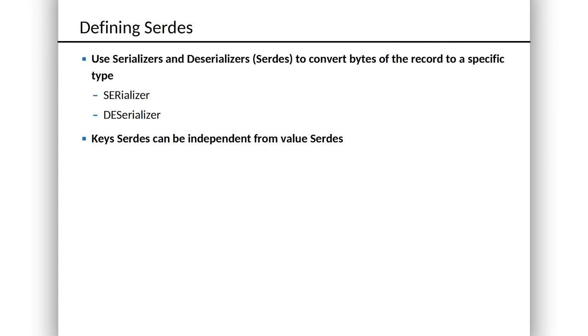A word about types. In the previous episode I said that the events in a stream are composed of a key and a value, and internally inside Kafka that's byte arrays. Kafka doesn't care, but you care a lot about the types of those things. So now we need to make some decisions about how the Streams API will serialize and deserialize the data types we're dealing with in our Java application into the bytes that go into Kafka and come back out. We're not going to dive deep into the topic of SERDes, but you're going to see these in the code.